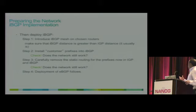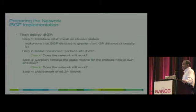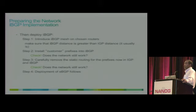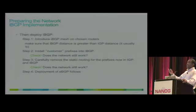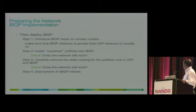Step two: install customer prefixes into BGP and make sure the network is still working. You can inject them by pointing a static null to the customer at the border router — a floating static null.